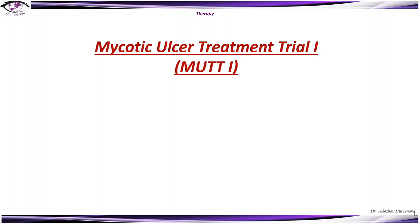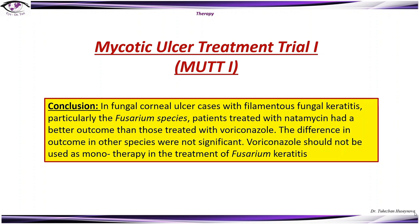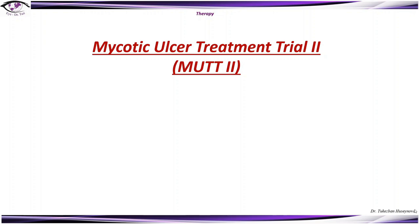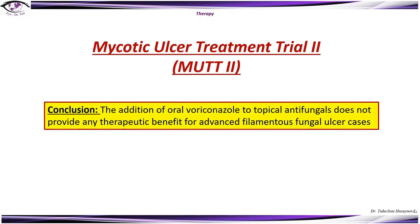The Mycotic Ulcer Treatment Trial 1 (MUTT 1) concluded that in filamentous fungal keratitis — particularly Fusarium species — patients treated with natamycin had better outcomes than those treated with voriconazole, and differences in outcome for other species were not significant. Therefore, voriconazole should not be used as monotherapy for Fusarium keratitis. MUTT 2 concluded that the addition of oral voriconazole to topical antifungals does not provide any therapeutic benefit for advanced filamentous fungal ulcer cases.